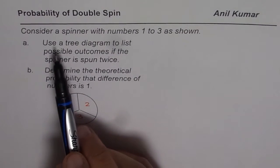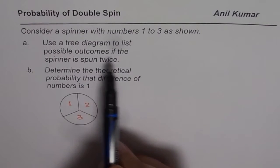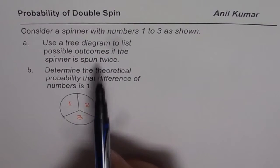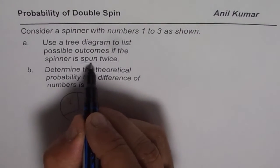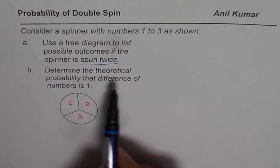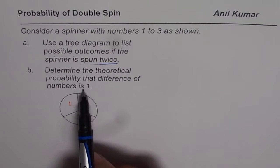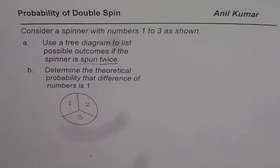Now the question is, use a tree diagram to list possible outcomes if the spinner is spun twice. And then part b is, determine the theoretical probability that difference of numbers is 1. So that is what you have to do.